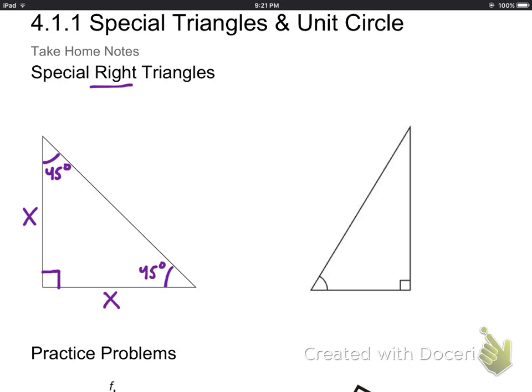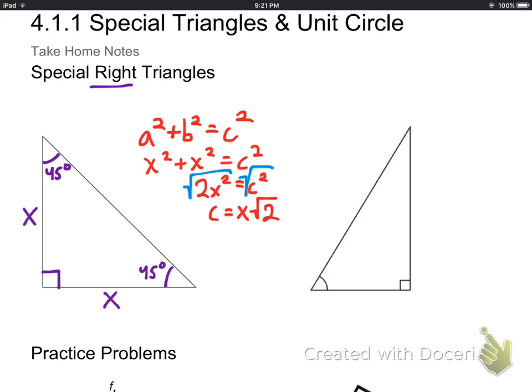We can find out the third side by using the Pythagorean theorem. So if we have a squared plus b squared equals c squared, then we plug in x's for a and b, and we get that c is x times the square root of 2.